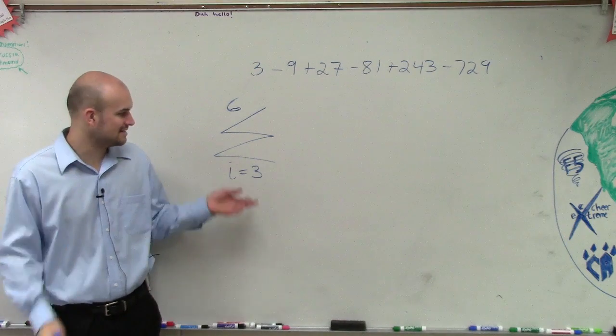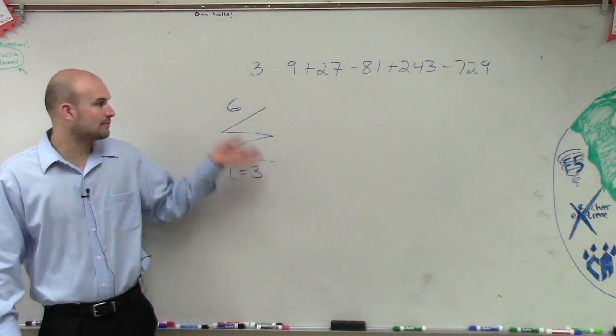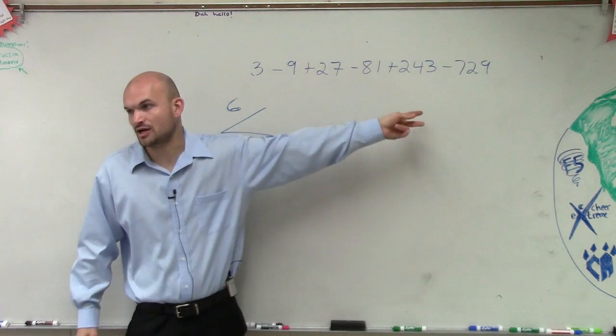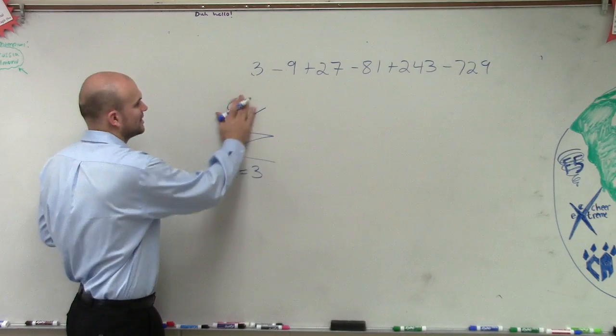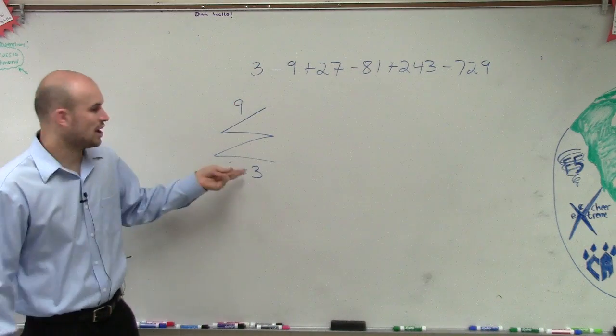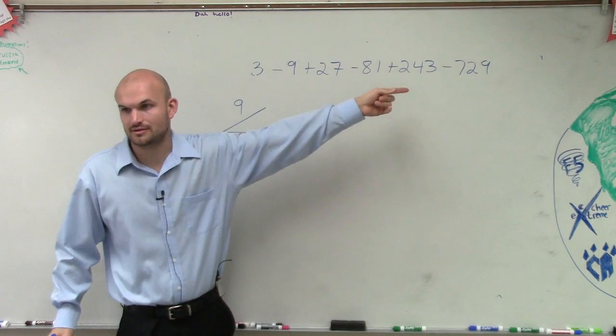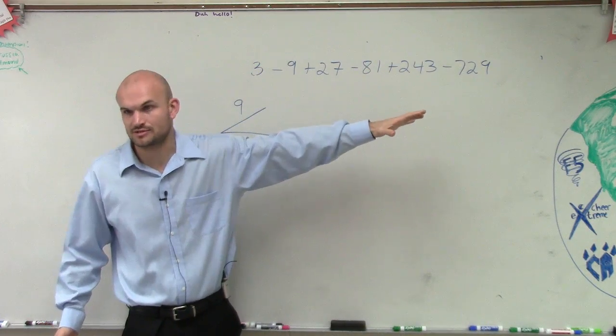If we start at three and then we went to six, then obviously we didn't cover all six terms, so maybe we go to nine. Okay, we start at three and then we go to nine. That's going to calculate for six terms, right?